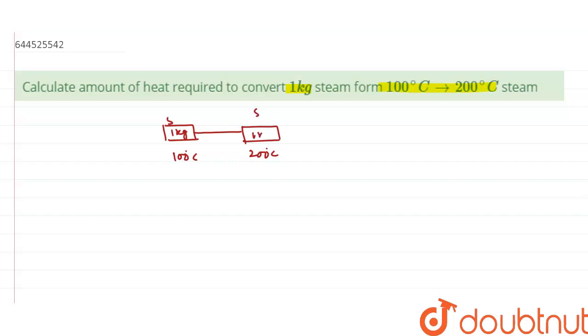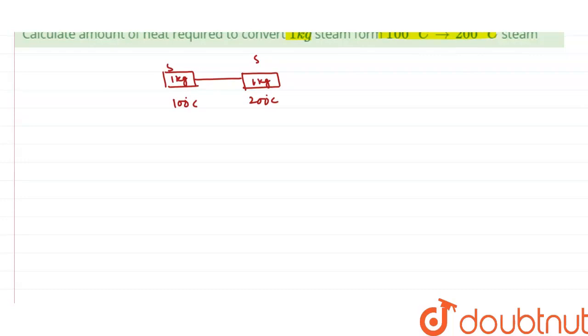And we have to change this steam at 200 degree centigrade. This is steam of same mass, 1 kilogram. So the heat required for this process is given by the formula delta q equals to m s delta t.